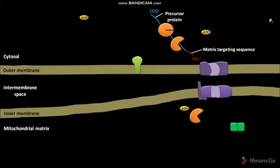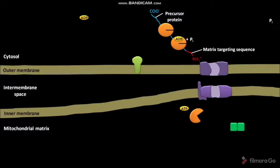Another cytosolic hsc70 then attaches to the nascent precursor protein. Another cytosolic ATP then binds with the attached hsc70 and undergoes hydrolysis to produce ADP and Pi. Due to this hydrolysis, the attached hsc70 undergoes a conformational change and binds to the nascent precursor protein. The ADP and Pi are then released into the cytosol.